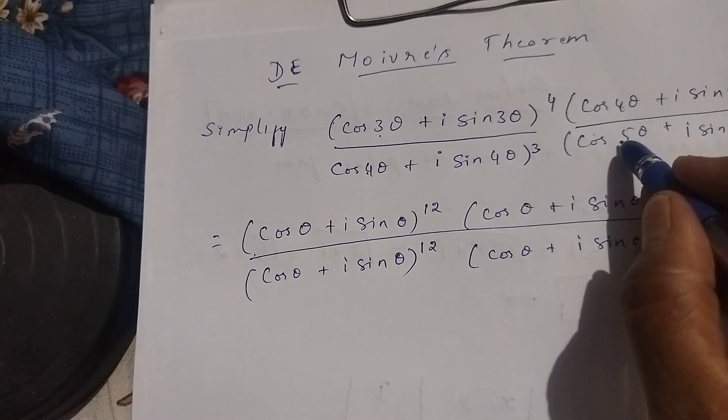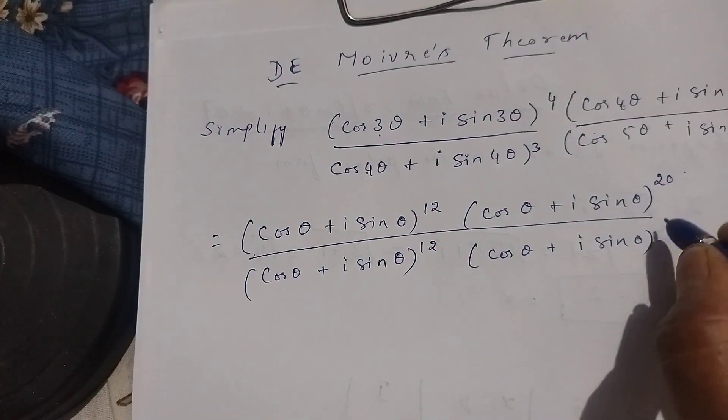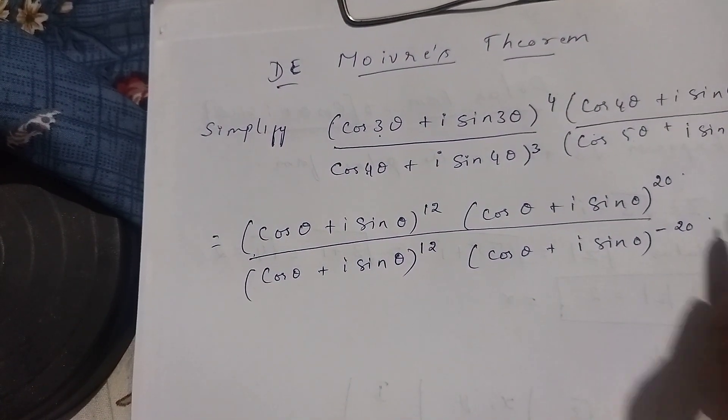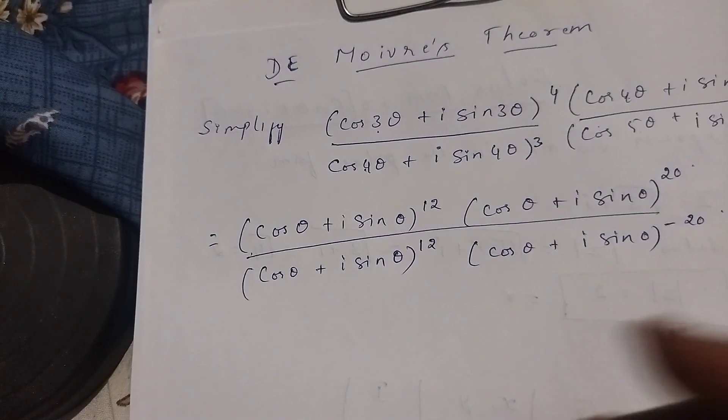5 fours are 20. Plus into minus is minus, so here it becomes minus 20.